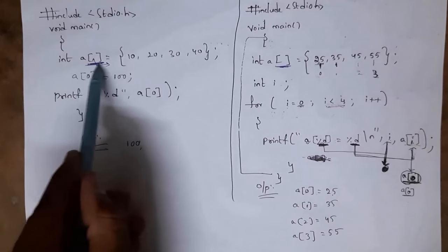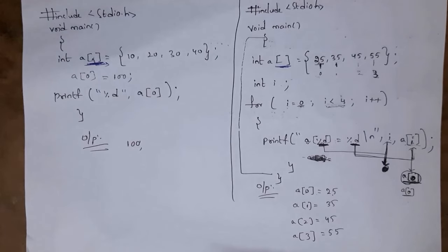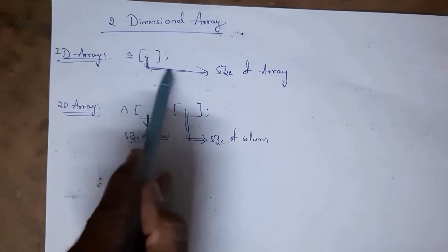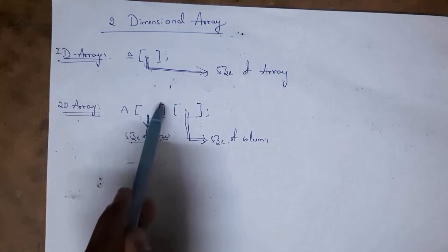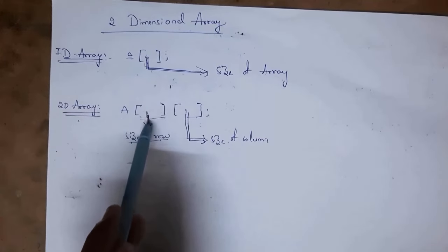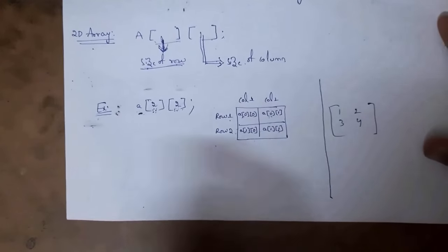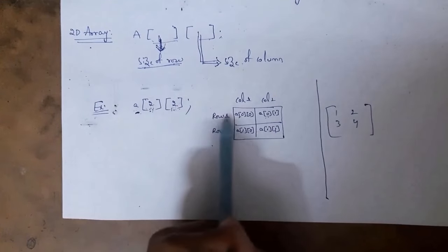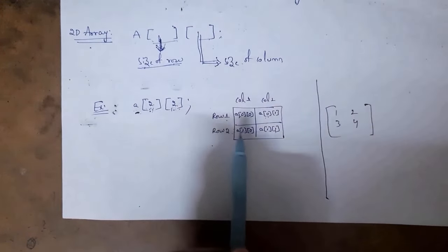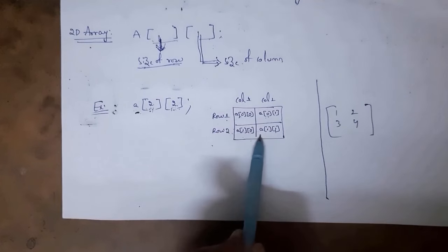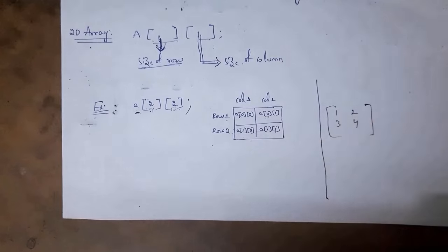That covers one dimensional arrays. In a one dimensional array there is only one square bracket where we include the size. But in a two dimensional array there are two square brackets — the first square bracket represents the size of rows and the second represents the size of columns. For example, if I declare a[2][2], it will create 2 rows and 2 columns, allowing me to store 4 elements. This two dimensional array looks the same as a matrix, so we can also call it a matrix.